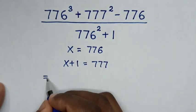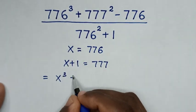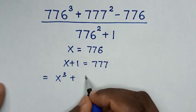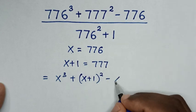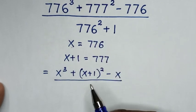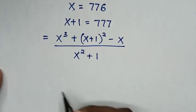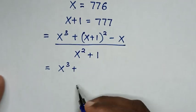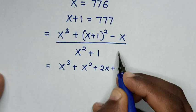Then it will be equal to: 776 we let as x, so x cubed, then plus 777 is x plus 1, so to be (x plus 1) bracket squared. Then minus 776 is x, so to be x, then over 776 squared is x squared, plus 1. In the next step, x cubed plus (x plus 1) squared expands to x squared plus 2x plus 1, then minus x.